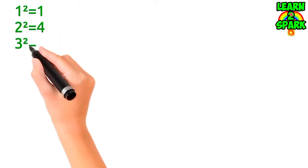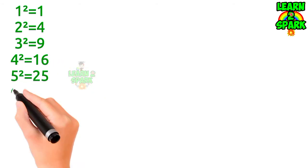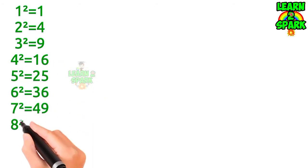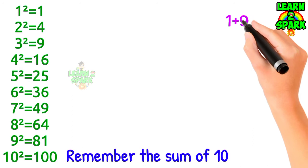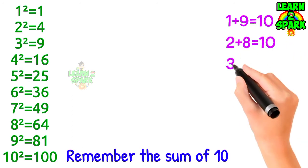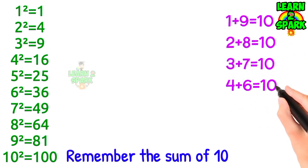First of all, you have to memorize the squares of first 10 natural numbers and you might write it down initially. And remember the sum of 10 which comes from the combination of 1, 9, 2, 8, 3, 7, 4, 6, 5, 5.